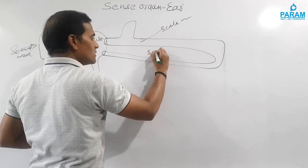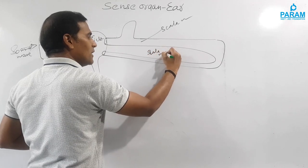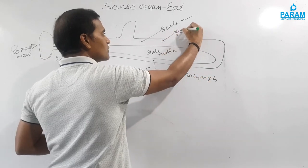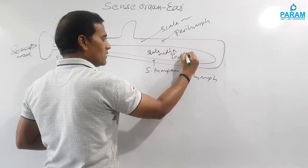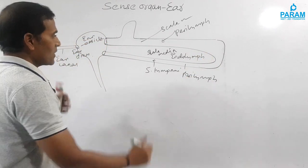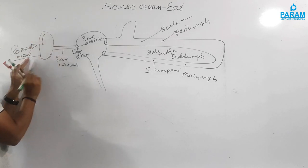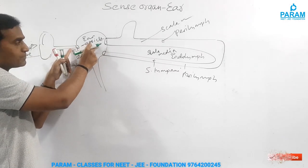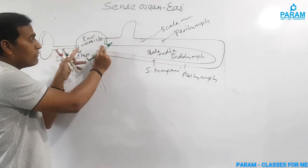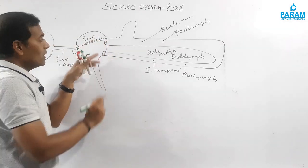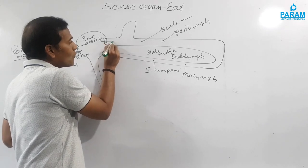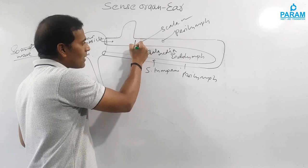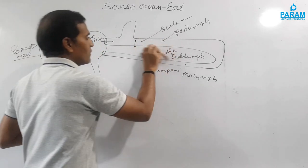The cochlear structure includes the scala vestibuli, scala media, and scala tympani. The scala vestibuli and scala tympani are filled with perilymph, while endolymph is present in the scala media. Sound waves collected by the pinna are transmitted to the ear drum — a stretched connective tissue — which vibrates. These vibrations, via the ossicles (malleus, incus, stapes), are intensified and sent to the oval window (fenestra ovalis), causing the perilymph to vibrate and transmit vibrations to the scala media.